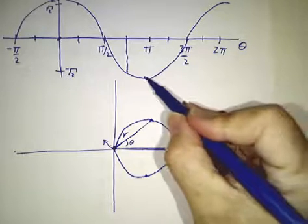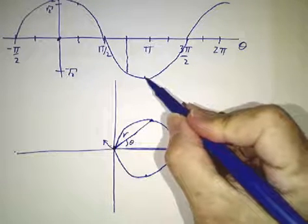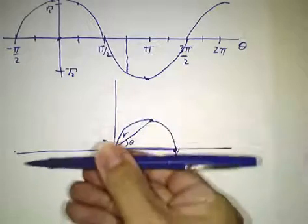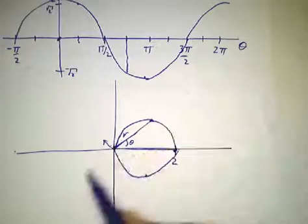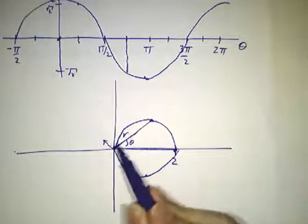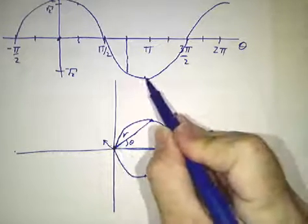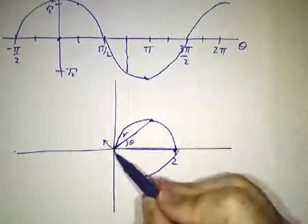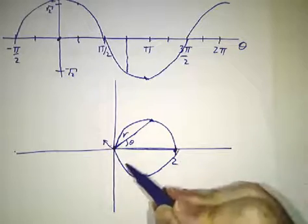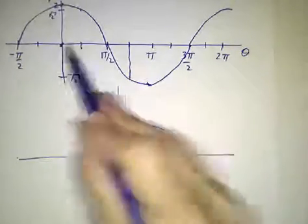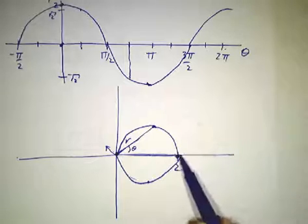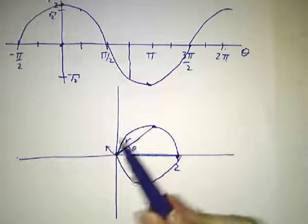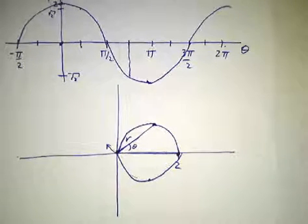And then you can check that if you continue past pi, r gets, that's the third quadrant, r gets less and less negative. Until by the time you hit 3pi over 2, you're back to 0. And then for the fourth quadrant, r is positive again. So actually, as theta goes from 0 to 2pi, you trace this loop twice. So that's the radar plot.